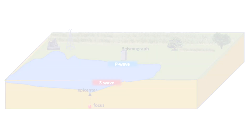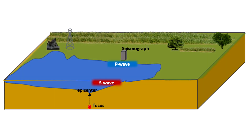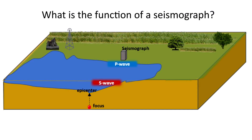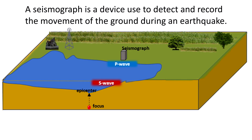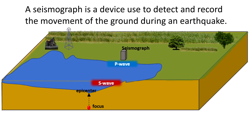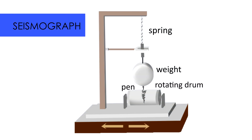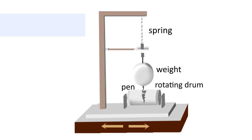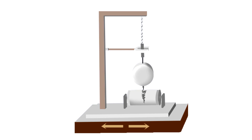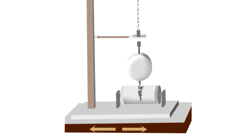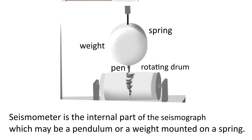Shown here is a diagram of a seismograph. What is the function of a seismograph? A seismograph is a device used to detect and record the movement of the ground during an earthquake. It consists of a ground motion detection sensor called a seismometer and a recording system. The seismometer is the internal part of the seismograph — it could be a pendulum or a weight mounted on a spring.